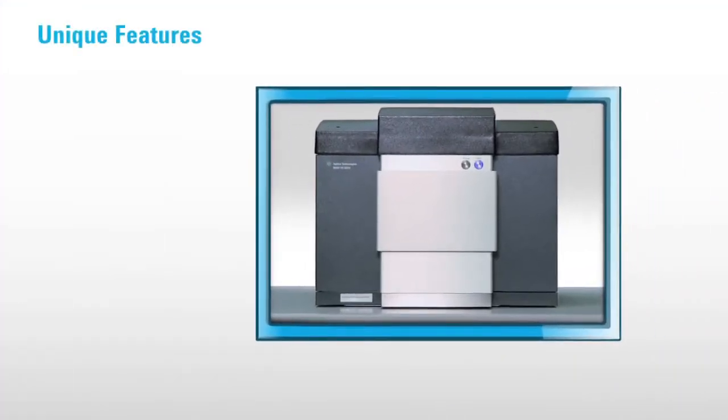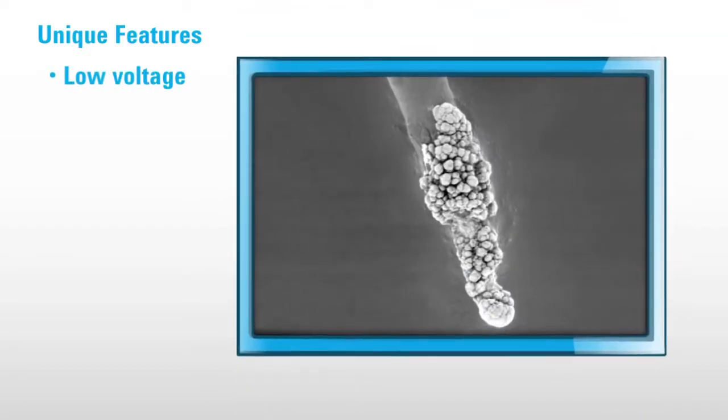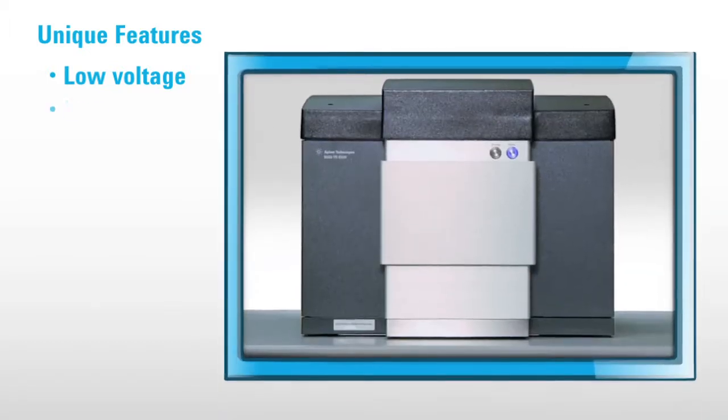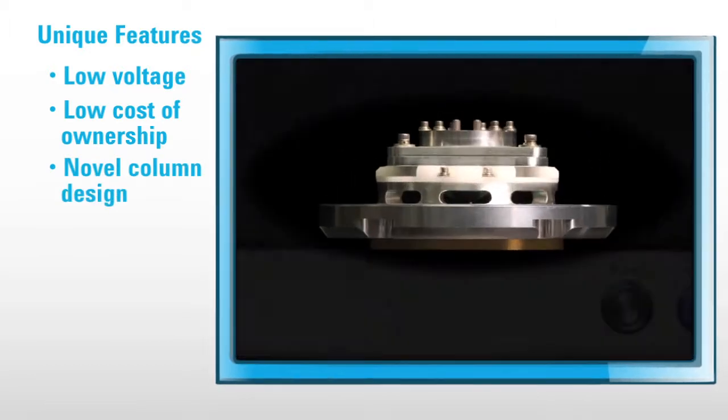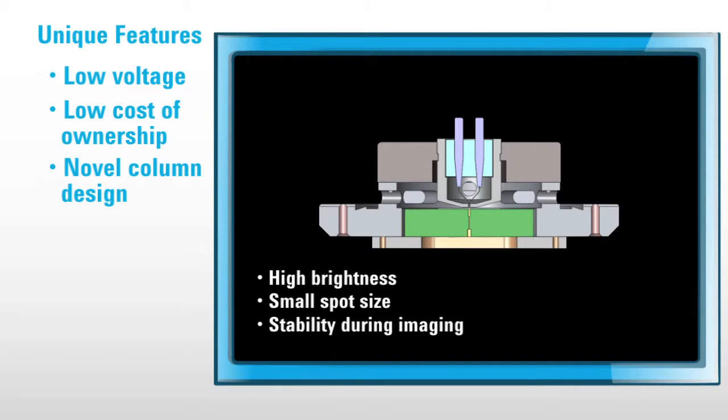The 8500 has unique features in terms of its low voltage capabilities for energy-sensitive samples or samples that tend to charge in the electron beam. It has a low cost of ownership, a novel column design that delivers high brightness, small spot size, and stability during imaging.